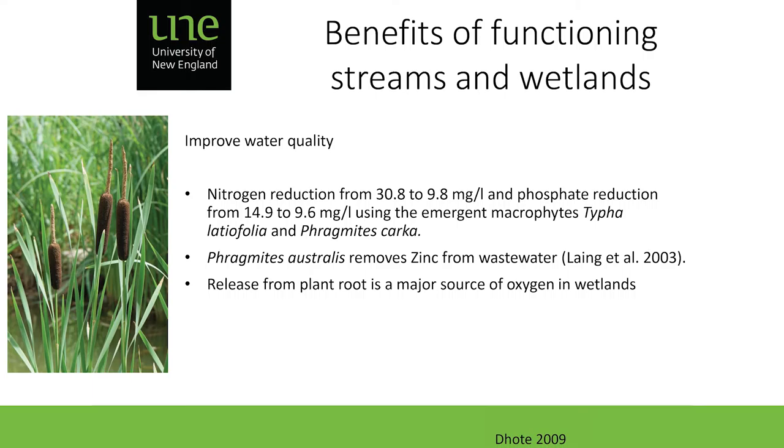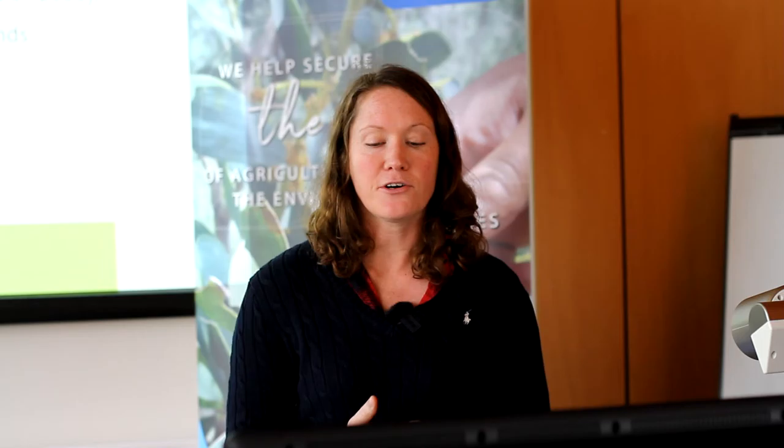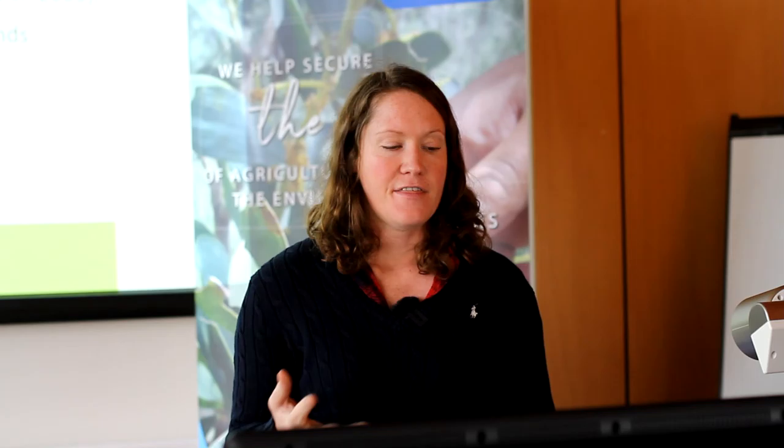Wetland plants can also remove metals from wastewater — phragmites will reduce zinc, for example — and produce oxygen, with plant roots being a major source of oxygen in wetlands. These are important functions that won't happen in an empty, damaged dam that won't allow plants to grow.